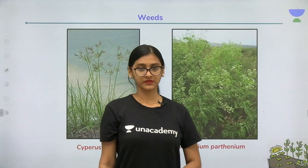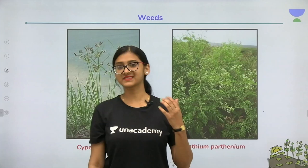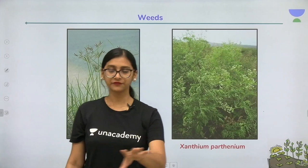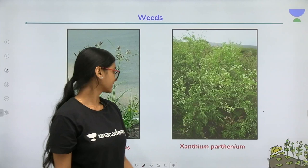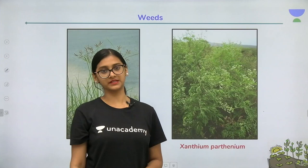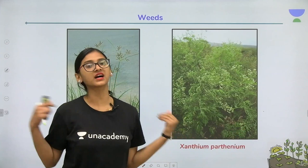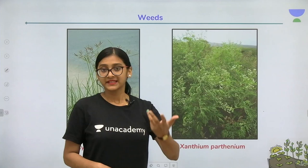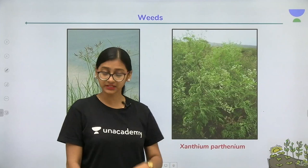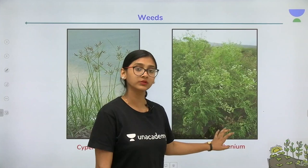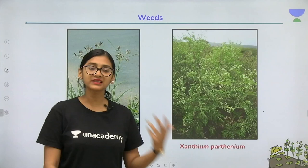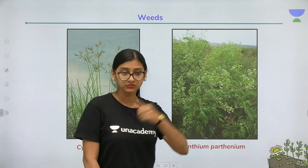Another major problem is weeds. If weeds like xanthium and parthenium are present in the field alongside your crops like wheat or mustard, all the fertilizer and organic nutrients you introduce will be taken up by the weeds, decreasing the crop's productivity. It is important to remove weeds — in earlier days they were uprooted by hand, but now we don't have enough laborers, so we use herbicides.